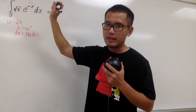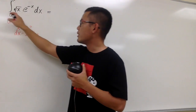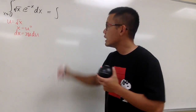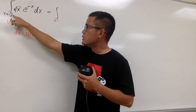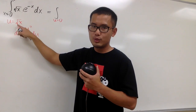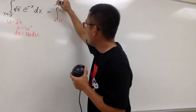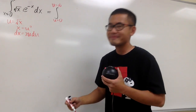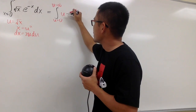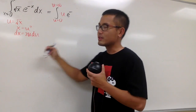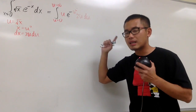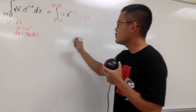We can now take this integral from the x world to the u world. Remember, x goes from 0 to infinity. When x = 0, u = square root of 0 = 0; when x = infinity, u = square root of infinity = infinity. So u also goes from 0 to infinity. Square root of x becomes u, negative x becomes negative u squared, and dx becomes 2u du, so the integral is completely in the u world.